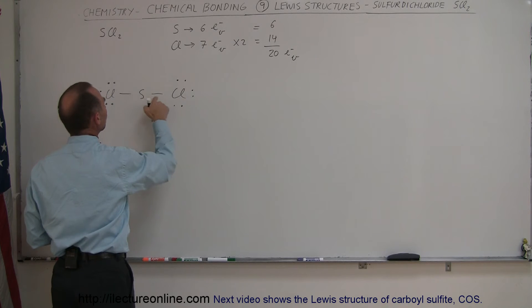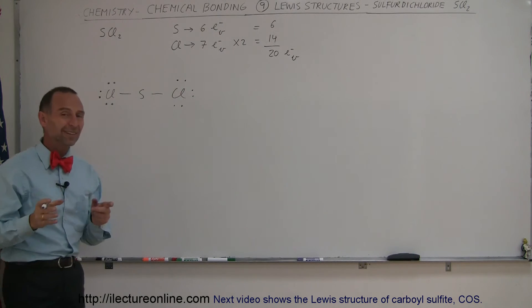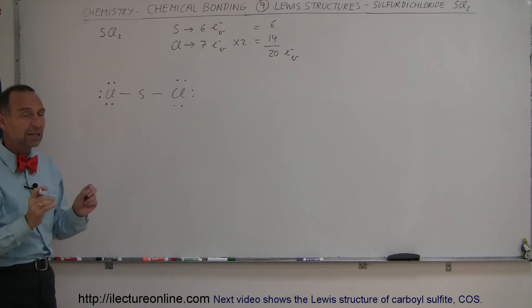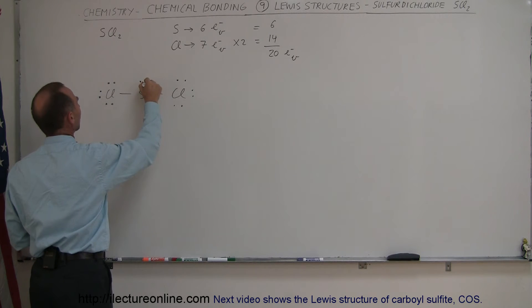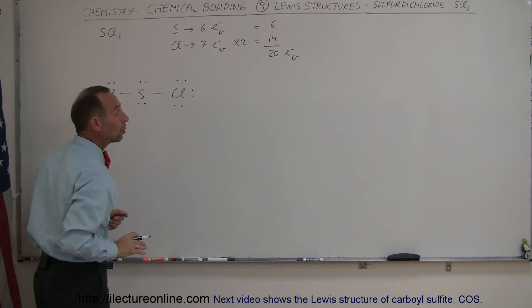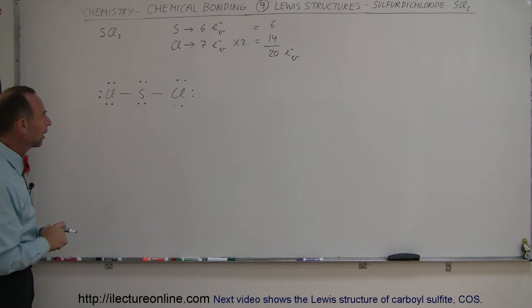With sulfur, it used two of its six electrons to make the bonds, one on each side. It has four remaining, so let's put the additional four electrons in like that. That looks like it should be the Lewis structure of sulfur dichloride.